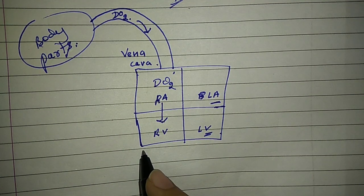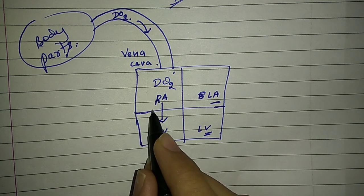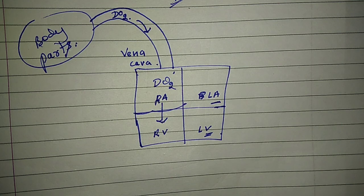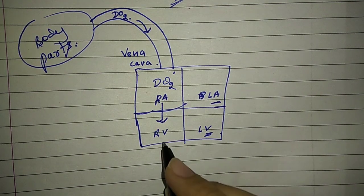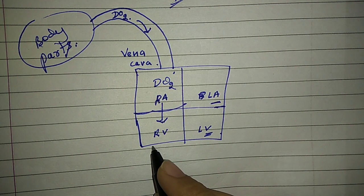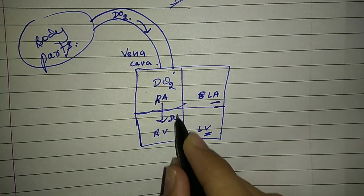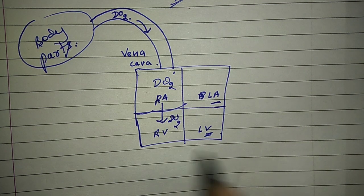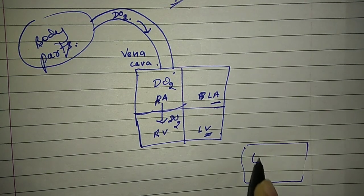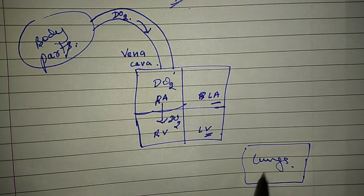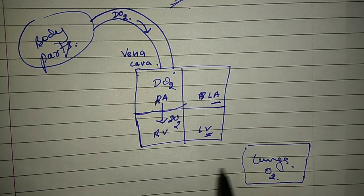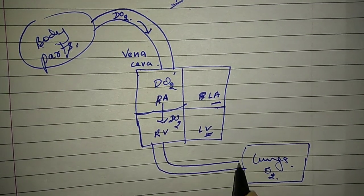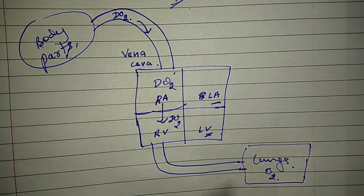This deoxygenated blood goes to the right ventricle through the bicuspid valve. This valve opens and blood flows down from the right atrium. Now let us come to the right ventricle.